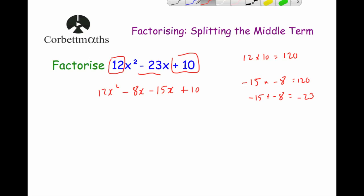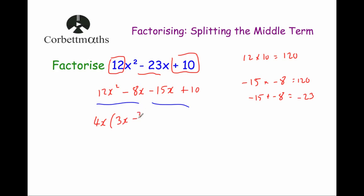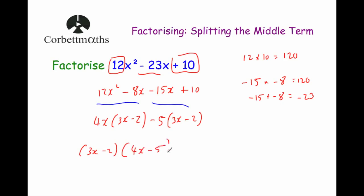Looking at the first half: 12x squared minus 8x — the common factor is 4x, giving 4x(3x − 2). For the second half: minus 15x plus 10 — we take out minus 5 so that we're left with 3x inside the brackets: minus 5(3x − 2), because 10 divided by minus 5 is minus 2. Both brackets are the same — 3x minus 2 — so we take that out, leaving (3x − 2)(4x − 5). That's our answer. You can expand to double-check.